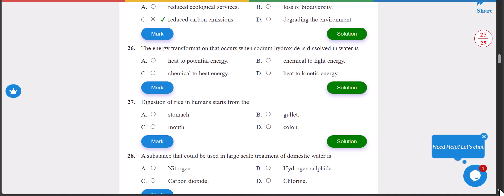Number 26: the energy transformation that occurs when sodium hydroxide is dissolved in water is C, that is chemical to heat energy.